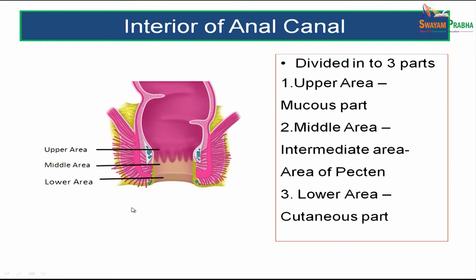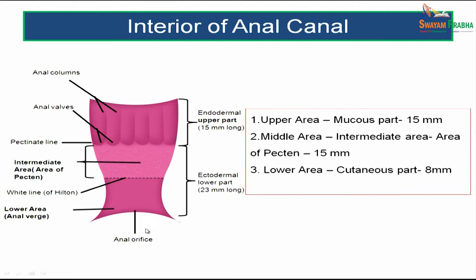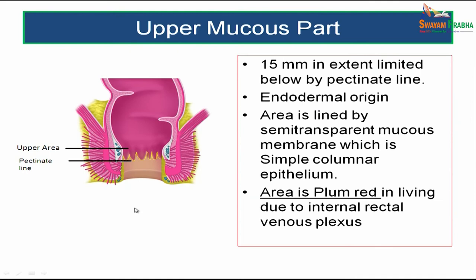Looking at the interior of the anal canal, it is divided into three parts: an upper area called the mucous part, a middle area called the intermediate area or area of pecten or transition zone, and a lower area called the cutaneous part. The measurements are: the upper mucous part is 15 millimeters long, the middle area is about 15 millimeters long, and the lower cutaneous part is 8 millimeters long.